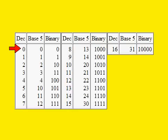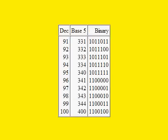Here is a table showing binary from zero to 16 decimal. Note that the binary number is already five positions wide. This leads to a rule: the lower the base, the greater the number of positions needed to represent a given value.